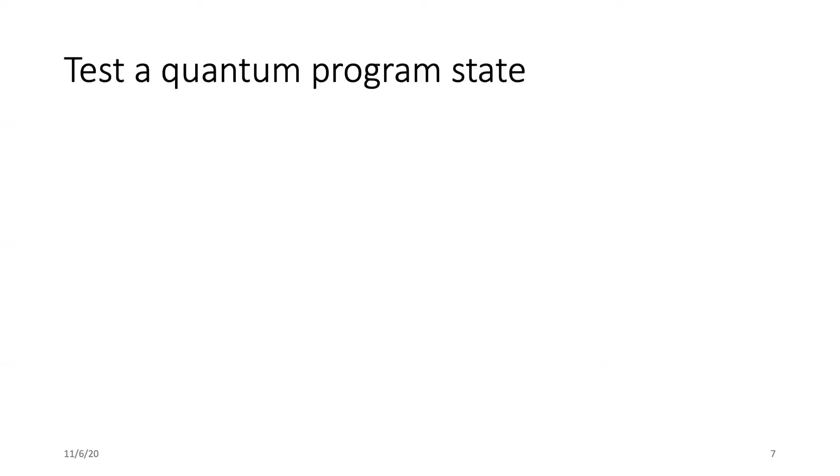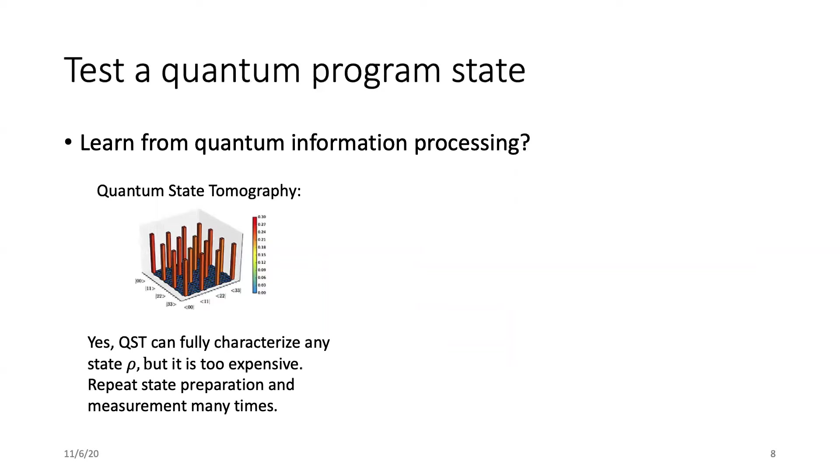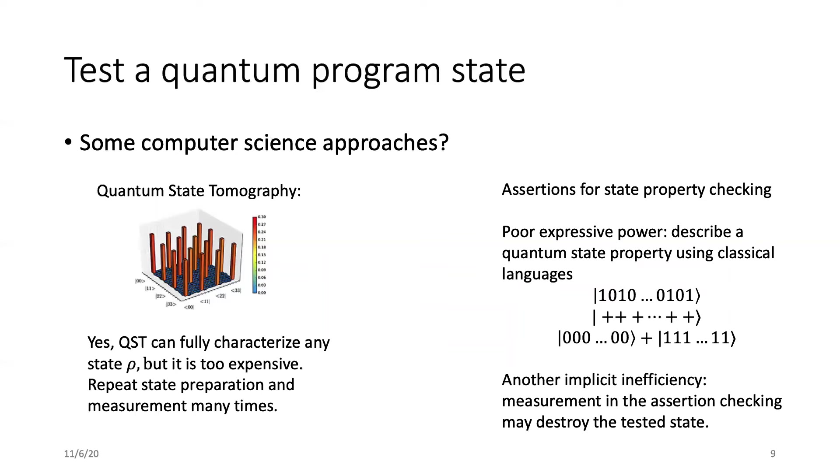In the rest of this talk, I will start from the theory side and then discuss some practical implementation issues. Testing a quantum program state on a quantum computer is somehow like physicists doing quantum experiments in their labs. So first, can we learn something from existing quantum information science? In traditional quantum information processing, one typical approach is called quantum state tomography. Quantum state tomography can fully characterize any mixed states, but it is usually very expensive. We need to repeat the state preparation and the measurement many, many times. Can we do something simpler and easier in computer science?